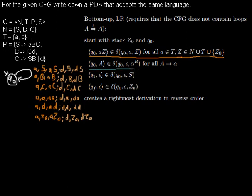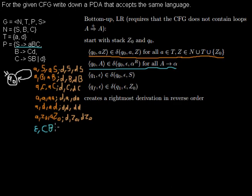Now we have the second line. It says that for all production rules — in this example we have four — we want a transition from q0 to q0. We read epsilon from the input string, and from the stack we read whatever is on the right-hand side of the rule but in reverse order. For the first rule, that means reading 'c', 'b', 'a' and pushing 's' onto the stack.